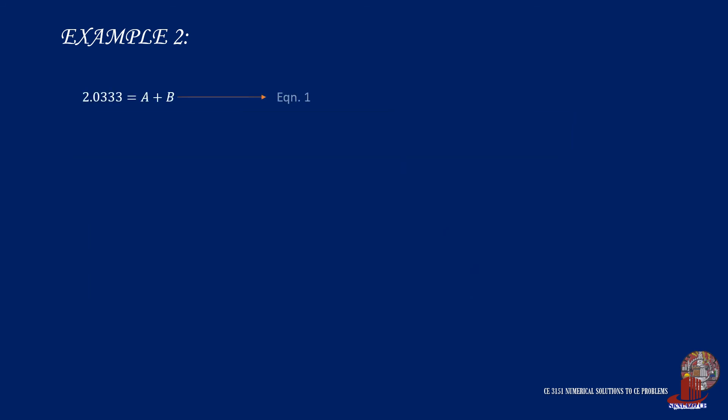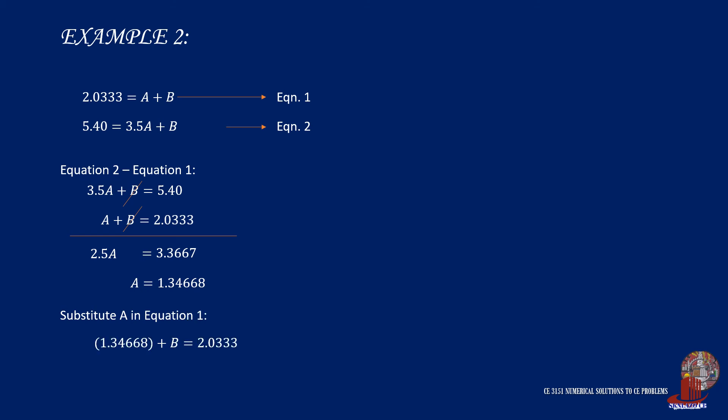With the derived equations, use elimination to cancel b and the simplified equation becomes 2.5a is equal to 3.3667. And by dividing both sides by 2.5, a is extracted as 1.34668. Plug this value into the first equation. So, 1.34668 plus b is equal to 2.0333 and b is computed as 0.68662. The best fit line for the data set is then taken as f of x is equal to 1.34668x plus 0.68662.